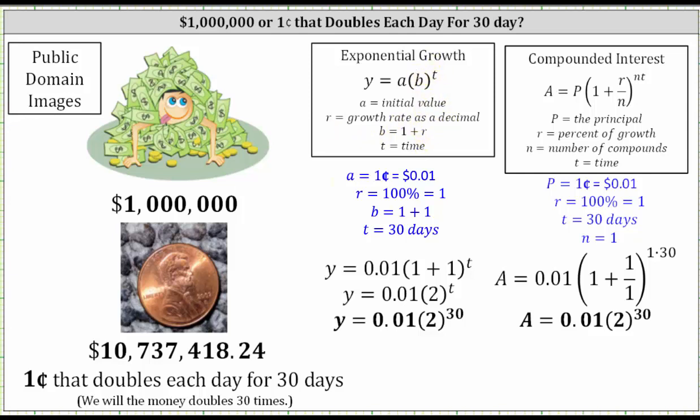So in our case, a is one cent, the starting amount, which in dollars would be 0.01 dollars. Because the amount is doubling each day, when something doubles, it increases by 100% and therefore r is 100%, which as a decimal is equal to one. And therefore the base b is equal to one plus one, and the exponent is t, which is time in days.